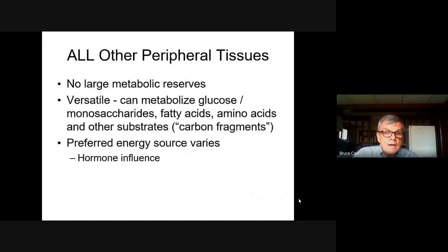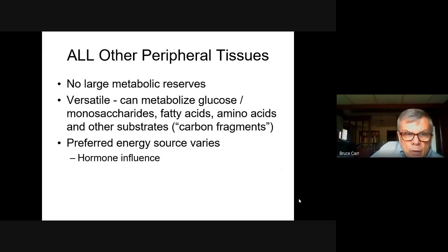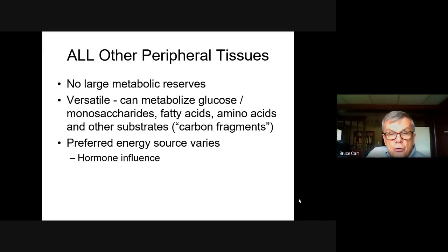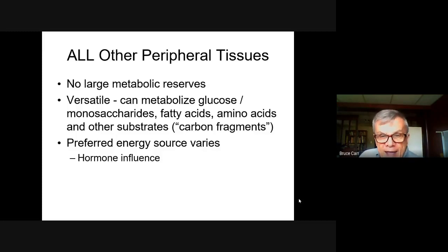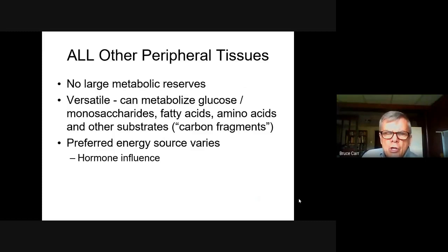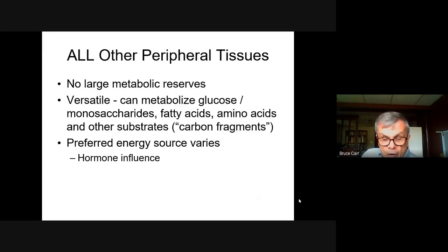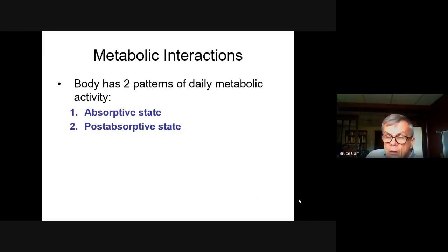All other peripheral tissues do not have any capability to store energy, but they are versatile in the nutrients they can use — all other carbohydrates, fatty acids, amino acids, and other substrates. That's why the term 'carbon fragments' is useful: it covers all of them. The preferred energy source sometimes varies under the influence of hormones.